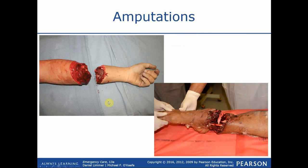With amputations — complete or partial — for a complete amputation, we take the amputated part, place it into a dry, clean bag, then place that dry clean bag into another bag with ice. We don't want the amputated part to come in direct contact with the ice — that's why we have the dry barrier in between. With surgical advancements today, they can reattach many things and even reconnect nerves to restore motor function, so never write anything off as unsaveable.